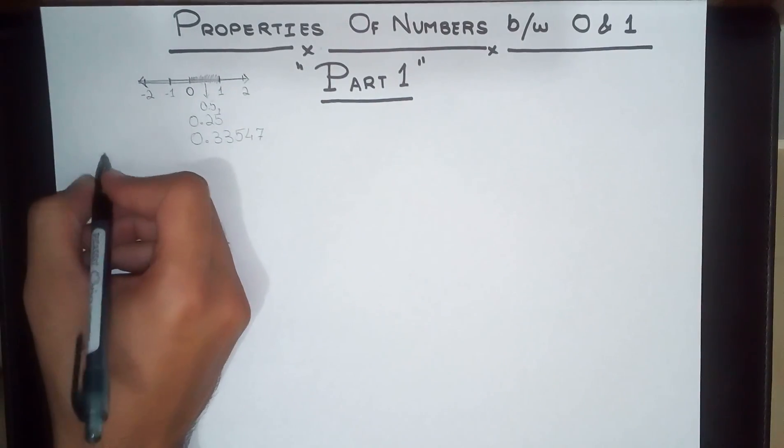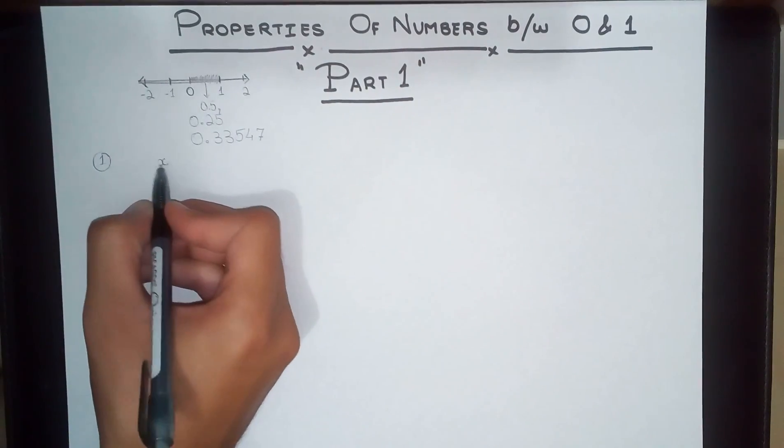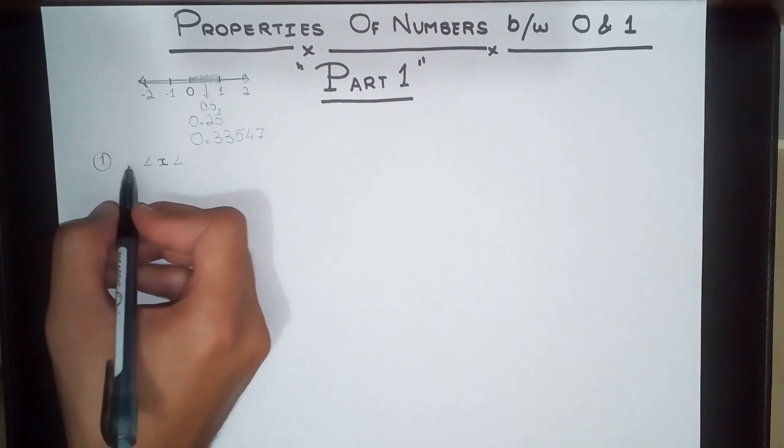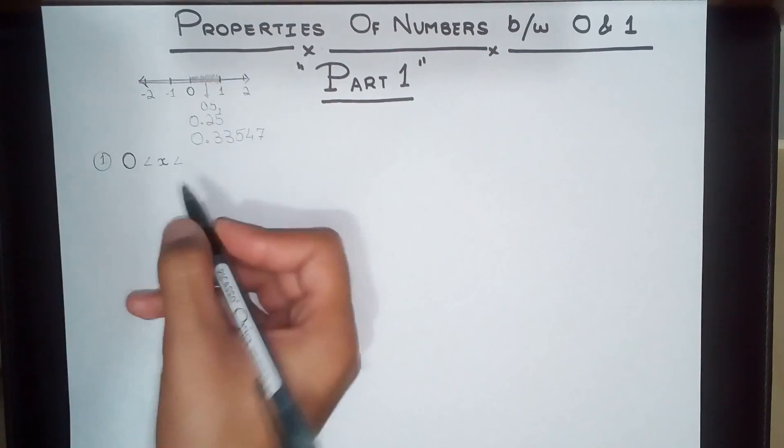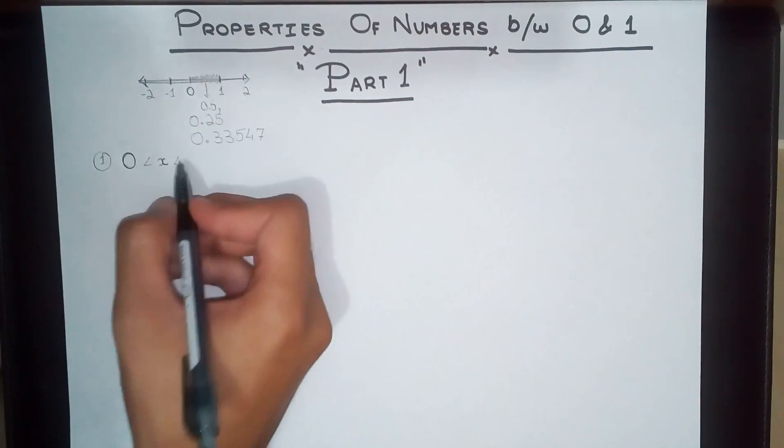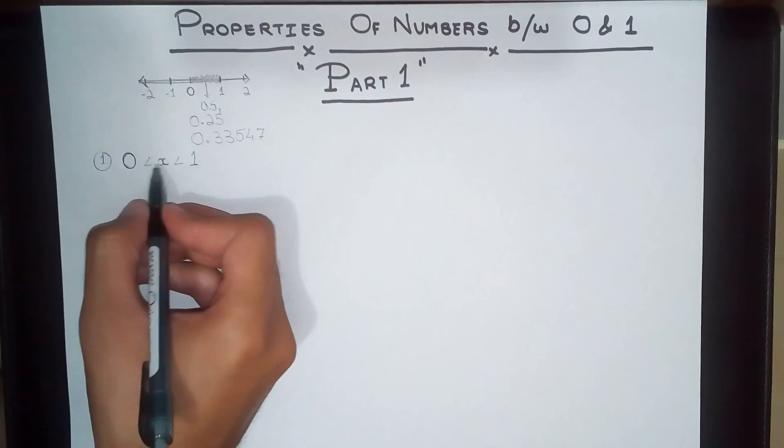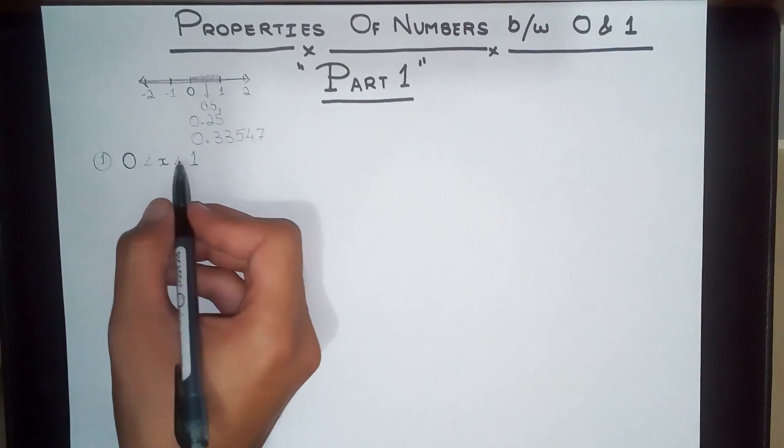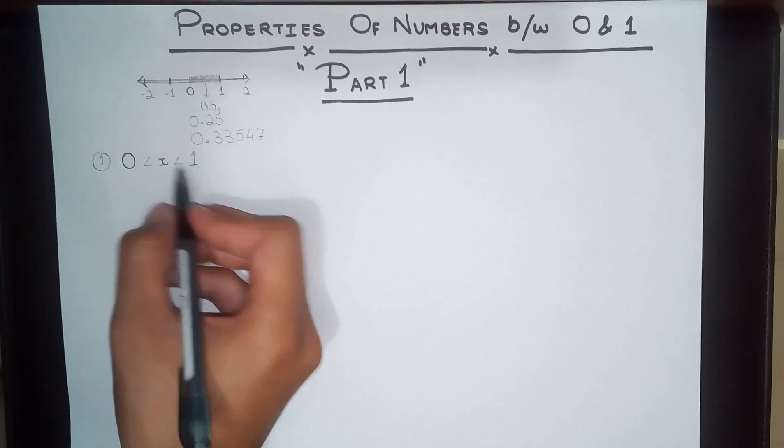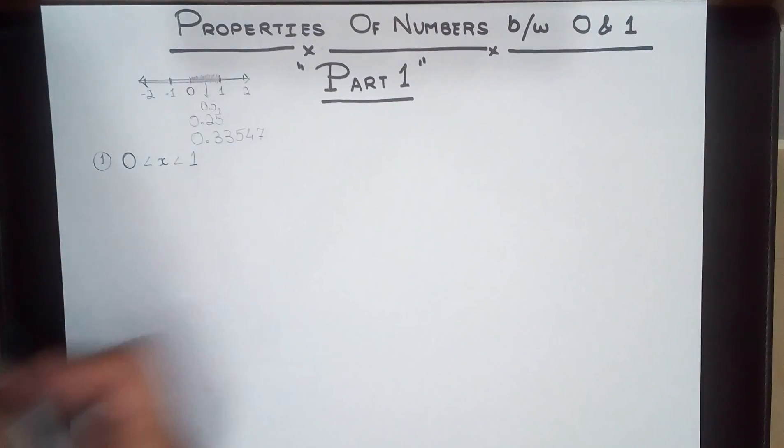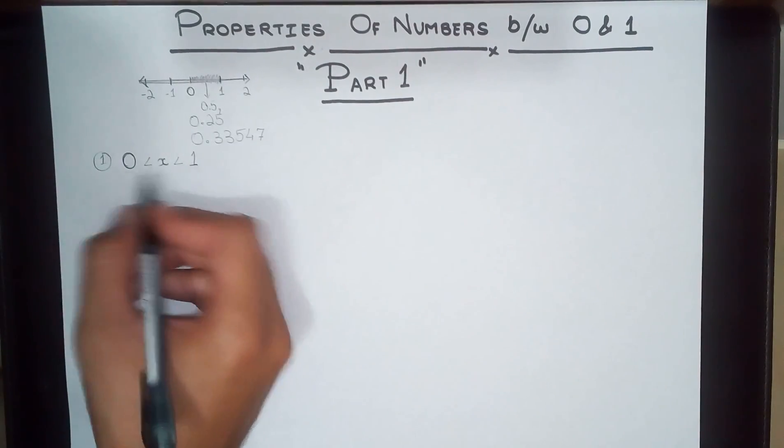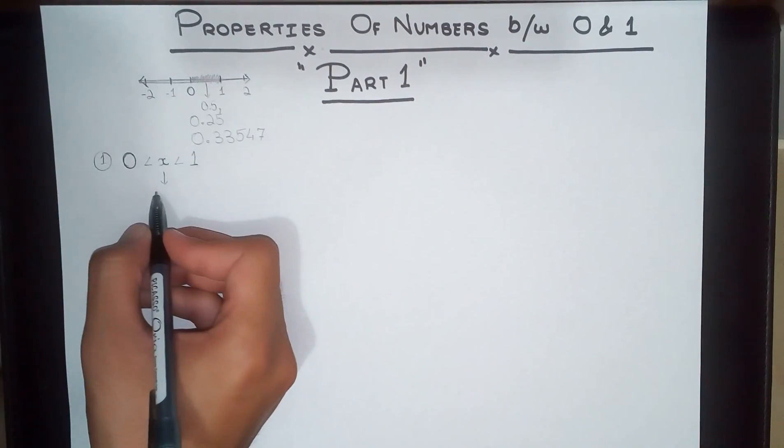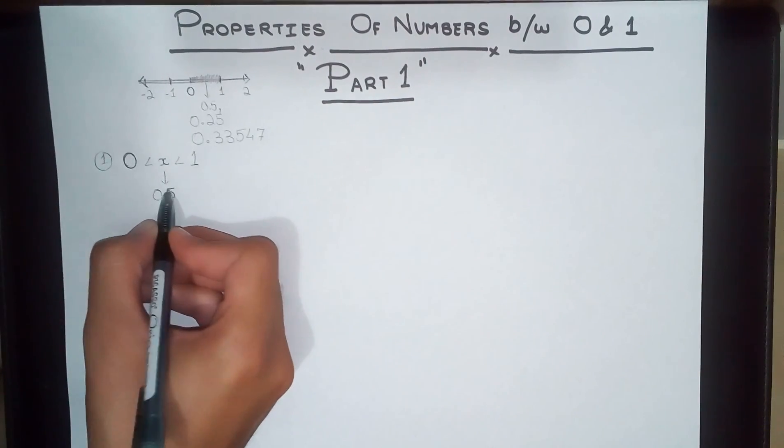The general way of writing all of this is by saying that the variable x is actually greater than 0 and less than 1. x is greater than 0, that is why the alligator's mouth is towards x, and 1 is greater than x. So generally this is what we're going to be discussing, and for specific terms we're going to...